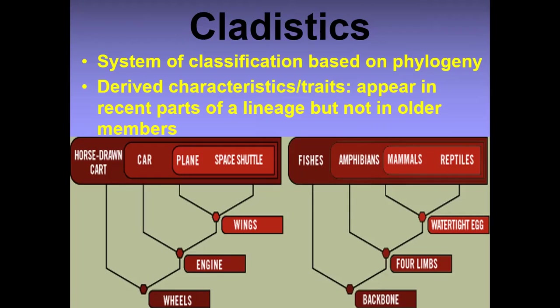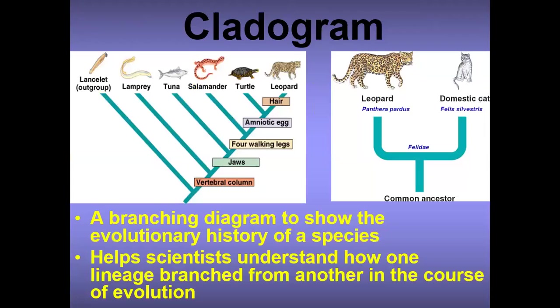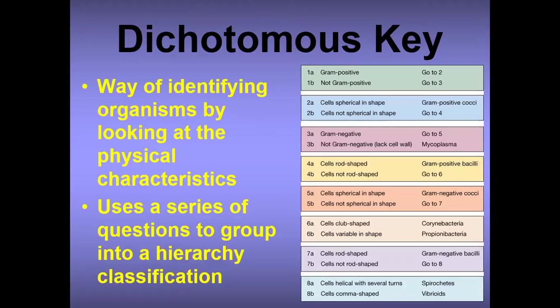We have cladistics, which is a system of classification based on phylogeny. We also have the cladogram. We have the dichotomous key, which is a way of identifying organisms by looking at physical characteristics. It uses a series of questions to group organisms into a hierarchy. For example: 1A gram positive — go to 2; 1B not gram positive — go to 3; 2A cells spherical in shape — it tells you what it is; 2B cells not spherical — go to 4, and so on.